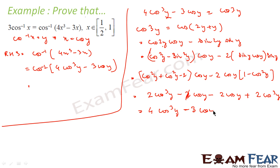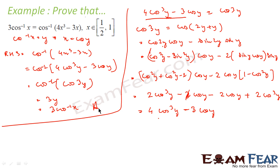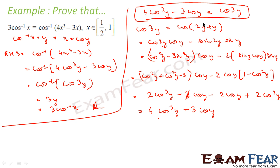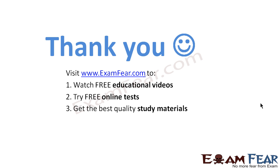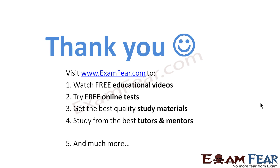After simplifying we get 4 cos³y − 3 cos y, which is exactly what we wanted to prove. Thus cos⁻¹(4 cos³y − 3 cos y) = cos⁻¹(cos 3y) = 3y = 3 cos⁻¹x, and RHS equals LHS. Thank you — visit examfear.com to watch free educational videos, try free online tests, get the best quality study materials, and study from the best tutors and mentors.